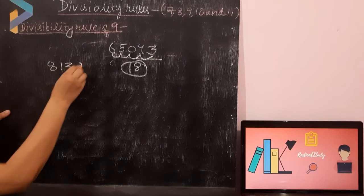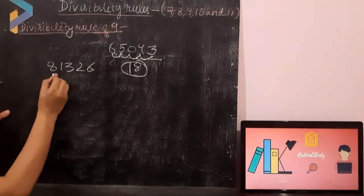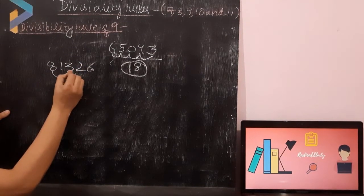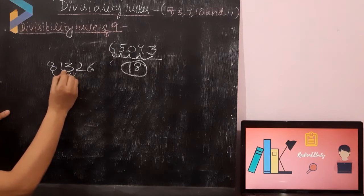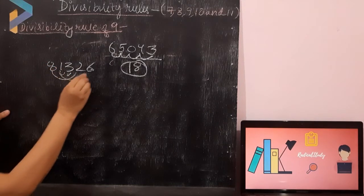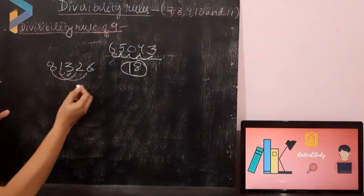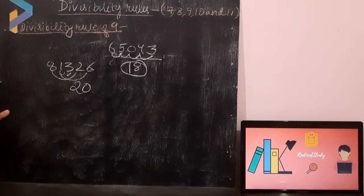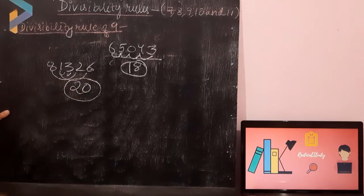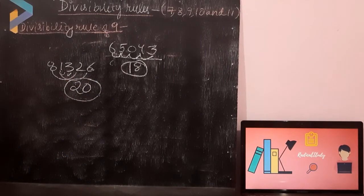Let's take one more example: 81326. We add up the digits — 8 plus 2 is 10, 10 plus 3 is 13, 13 plus 1 is 14, 14 plus 6 is 20. So is this number divisible by 9? No, because 20 is not divisible by 9. So this is how we check divisibility by 9.